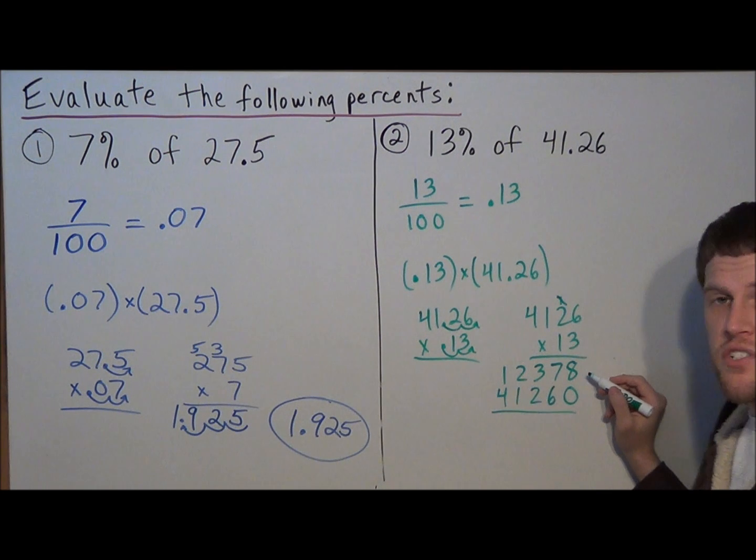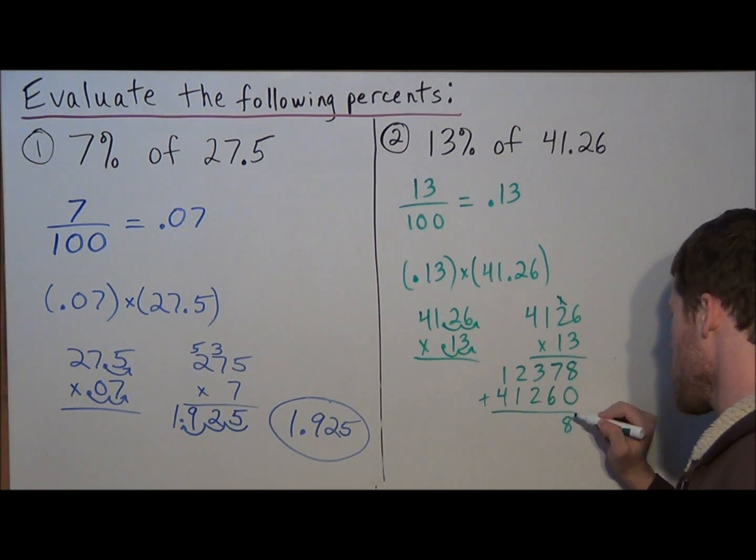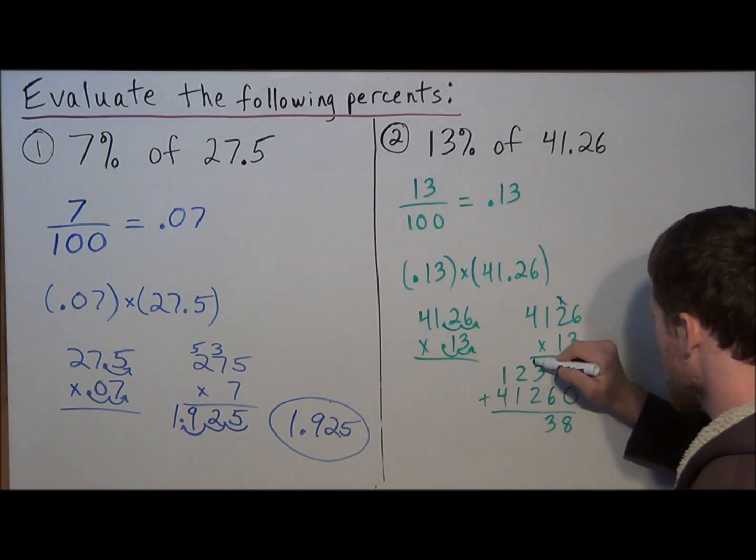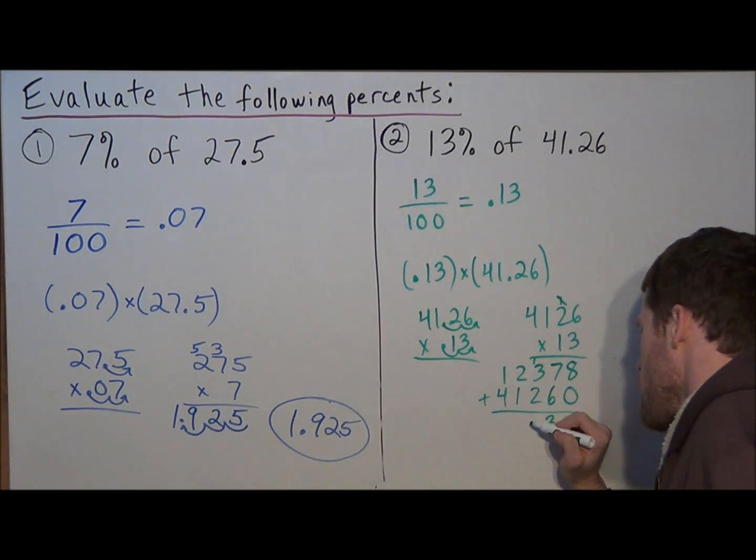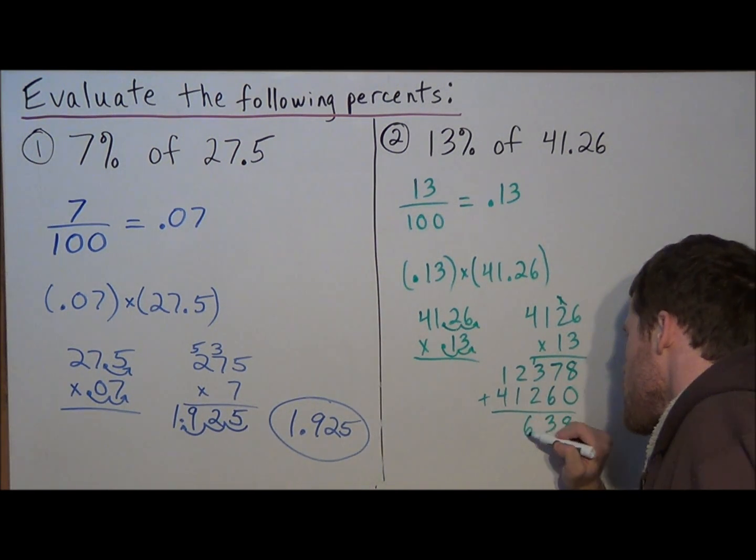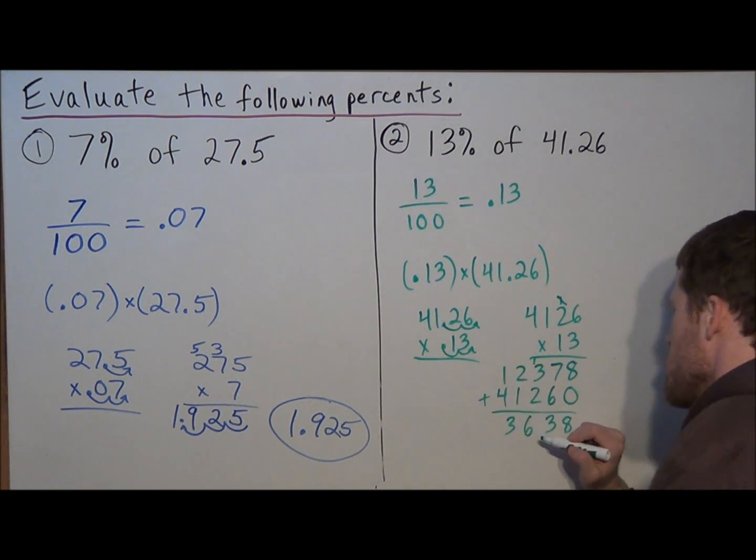Okay, so one of the last steps. Now we just add up all these numbers here. So we have 8 plus 0 is 8, 7 plus 6 is 13, we have to carry a 1. So now we have 1 plus 3 plus 2, which is equal to 6. And then we have 2 plus 1 is 3, 1 plus 4 is 5.